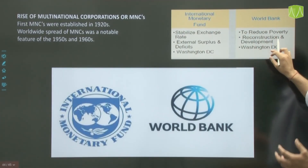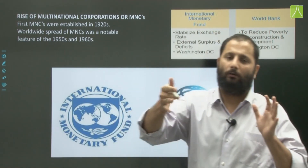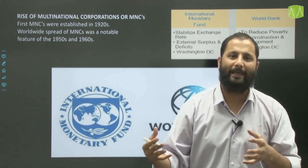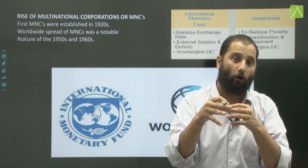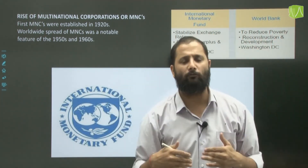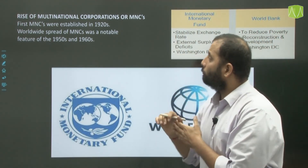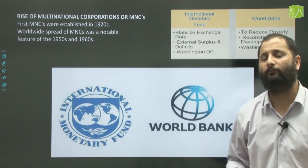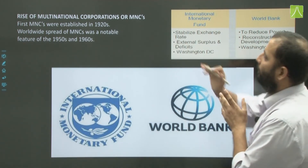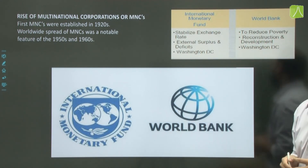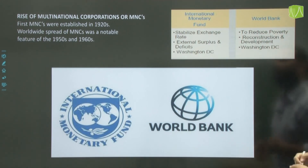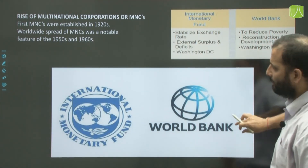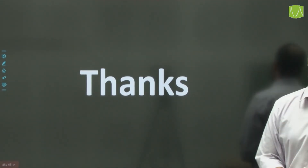The early post-war years saw unprecedented growth of trade and incomes for western industrial nations and Japan, and a worldwide spread of technology and enterprise. After decolonization, many nations became independent, and Bretton Woods institutions shifted attention to developing countries, though they were not fully prepared for those challenges. Developing countries organized themselves into groups like G77 to demand a new international economic order (NIEO). The rise of multinational corporations (MNCs) — first established in the 1920s — with worldwide spread being a notable feature of the 1950s and 60s, marks how globalization and the making of a global world took shape, from silk routes through colonization, migration, two world wars, and post-war reconstruction. Thank you for watching this one-shot video.